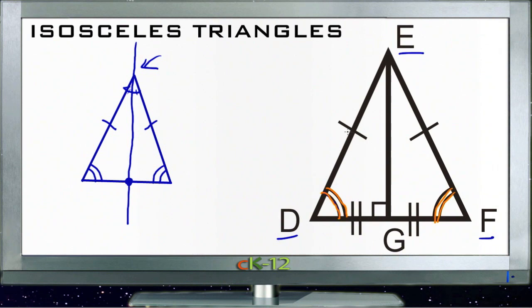And a line that bisects the top angle here will also bisect the bottom of the triangle, line side down here, side G. So that means that this section from D to G is congruent with the section from G to F.